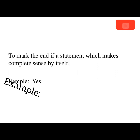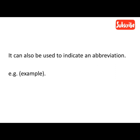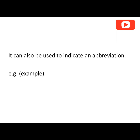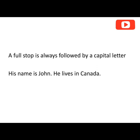A full stop can also be used to indicate an abbreviation. For instance, 'e.g.' which means 'example.' So we use a full stop to indicate an abbreviation. Also, when you use a full stop, it is always followed by a capital letter.